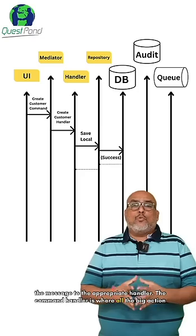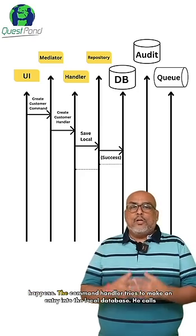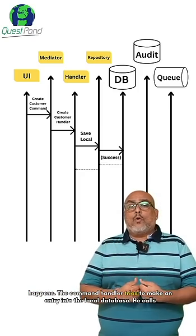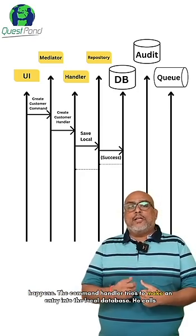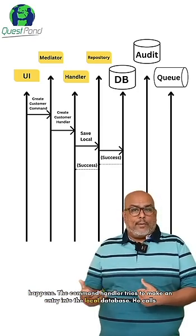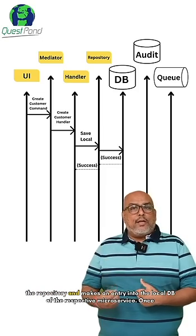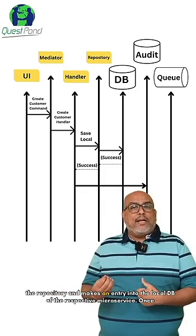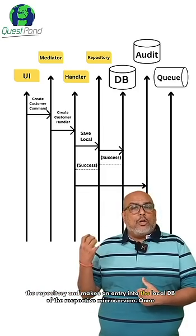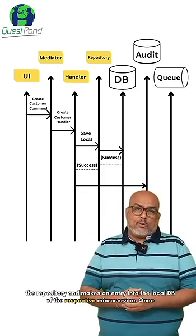The command handler is where all the big action happens. What it does first is try to make an entry into the local database — it calls the repository and makes an entry into the local DB of the respective microservice.